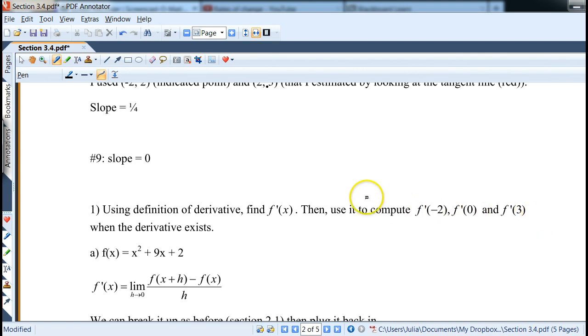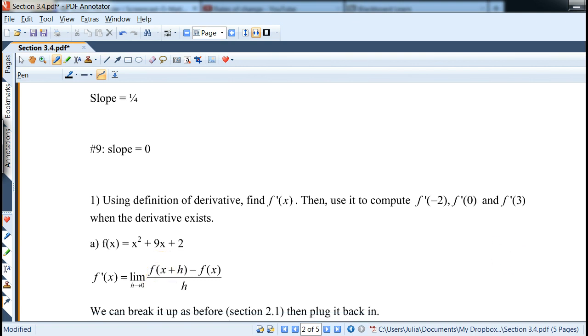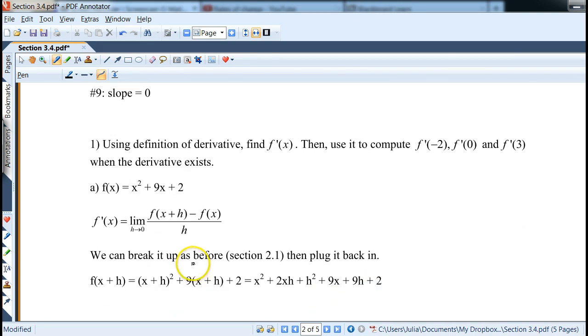So there is definite advantage of finding the derivative function first and then plugging in different points to find a slope of tangent line at those points, rather than having to recalculate the whole limit definition with each one of them. So notice how we do it with a function. It's actually very similar, sort of like similar in section 2.1. We'll plug in x plus h for the x. Notice how we expand this out. We get x squared plus 2xh plus h squared for the first term and then distribute the 9 plus 9x plus 9h plus 2.